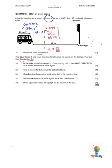Is the velocity and acceleration of the braking taxi in the same direction as it moves towards the traffic light? If we look at the velocity of the taxi, the taxi was traveling to the right. So even though he's braking, he started with a speed of 25 meters per second — he's slowing down, but he's still moving to the right. So his velocity was to the right. But when we have braking, braking means negative acceleration. It means acceleration is against motion, meaning that the object is slowing down. So his acceleration would be to the left.